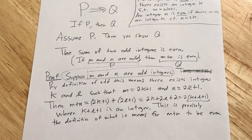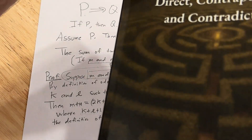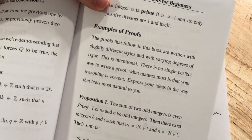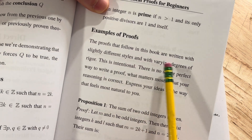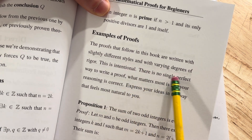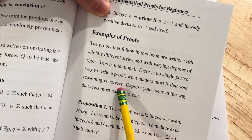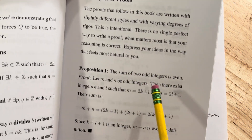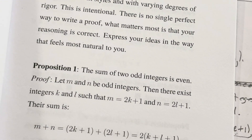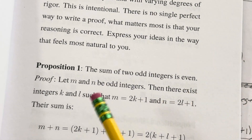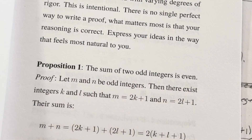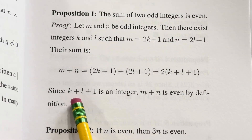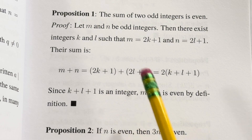I have the proof written down from one of my books — a very small book on proof writing with correct mathematical proofs. It actually says: 'The proofs that follow are written with slightly different styles and varying degrees of rigor. This is intentional. There is no single perfect way to write a proof. What matters most is that your reasoning is correct.' The book's version is very similar to what we did, just a little shorter at the end.